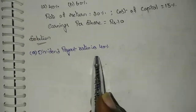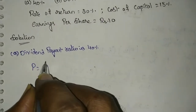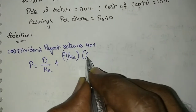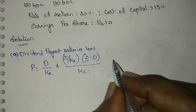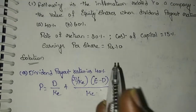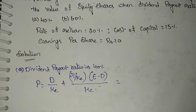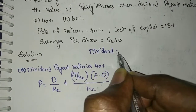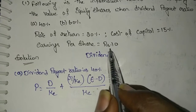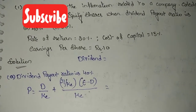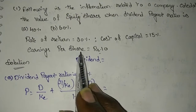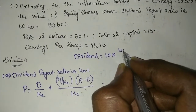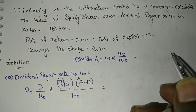First, we will calculate at dividend payout ratio of 40%. The formula is P equals D divided by KE, plus R by KE into E minus D, whole divided by KE. D is the dividend, but they have given the ratio, not the direct dividend amount. So first, calculate the value of dividend: it is calculated on earnings per share, so 10 rupees into 40 divided by 100, giving us 4 rupees.